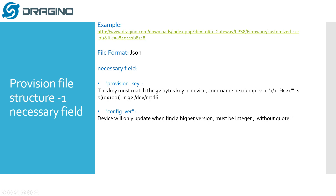The second necessary field is the configure version. The device will only update when the server has a higher version than the device. This configure version must be an integer. The provision key is used as a security check — if the provision key in the file does not match the key stored in the gateway, the gateway will ignore the file and not perform any update.